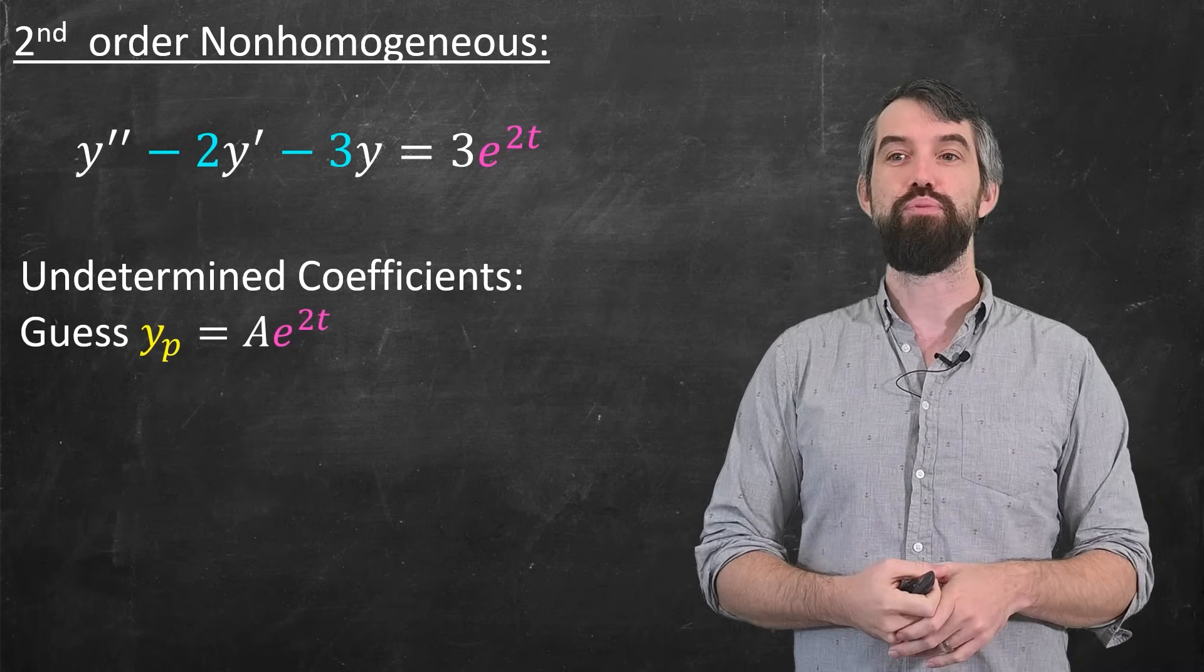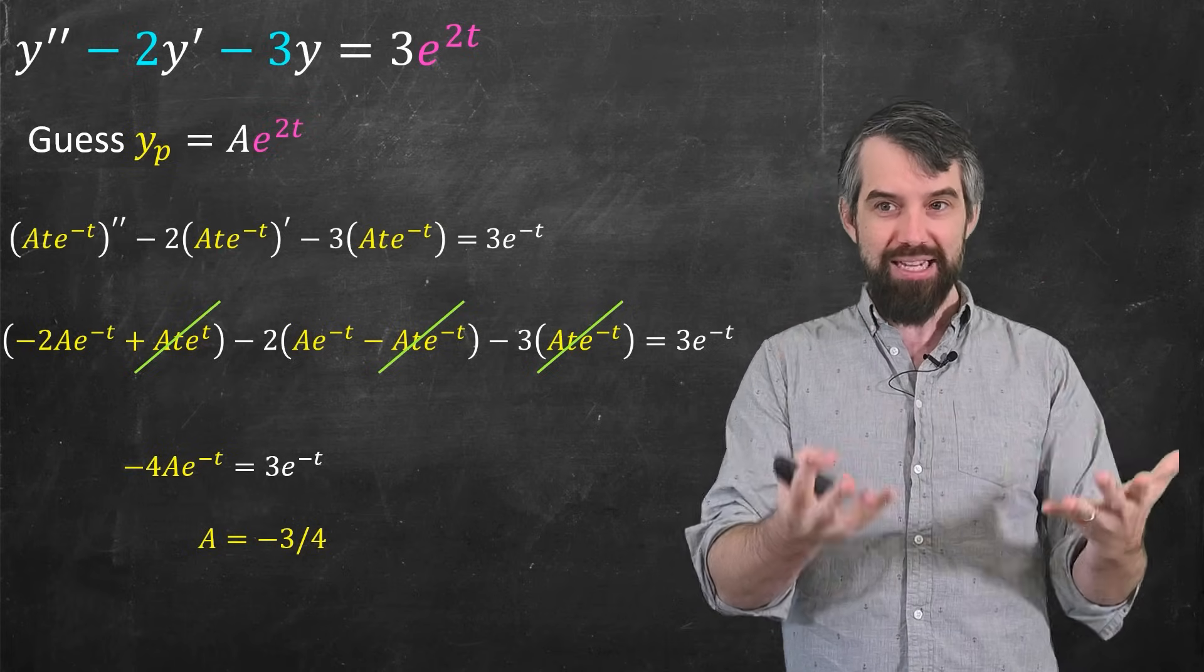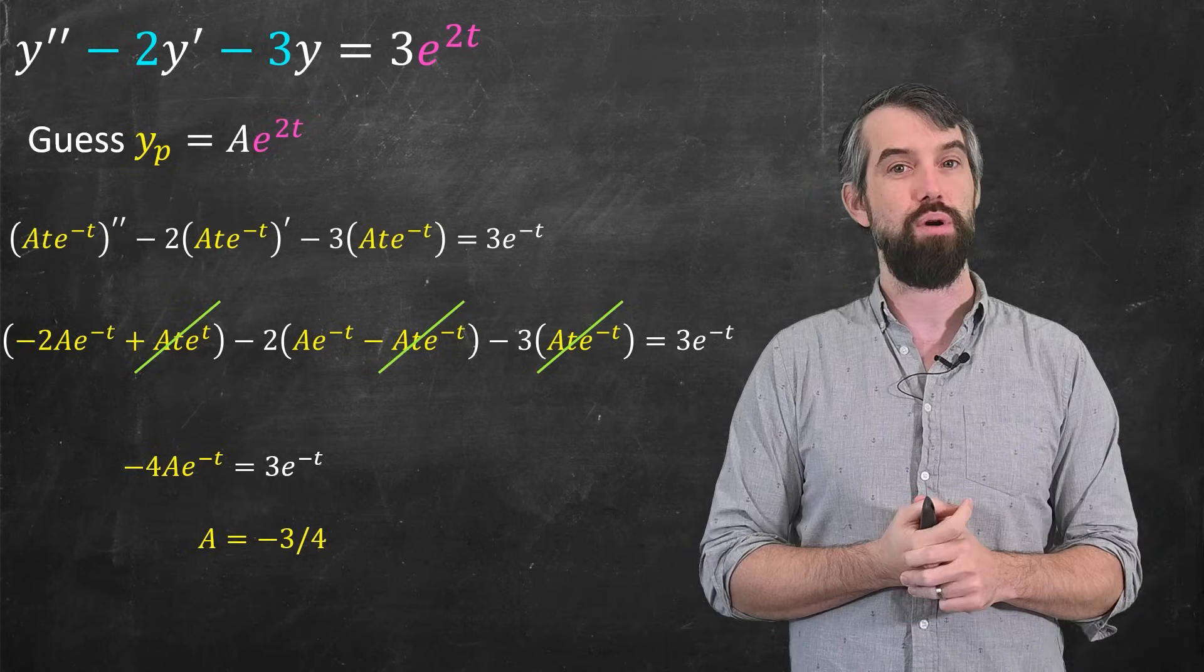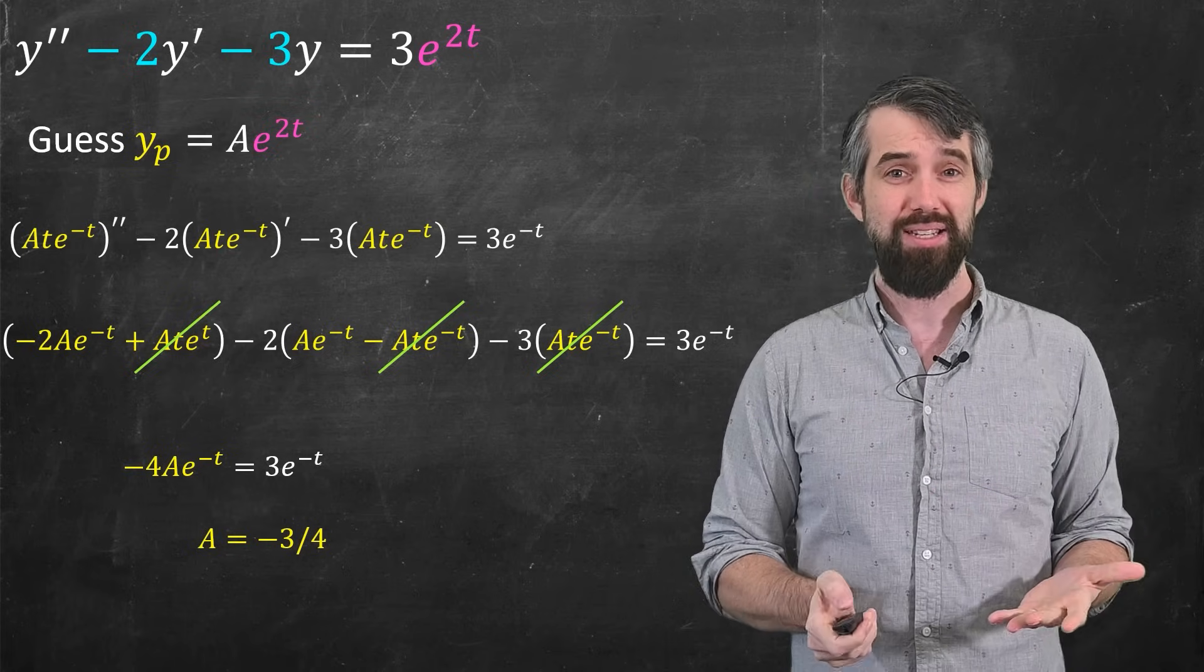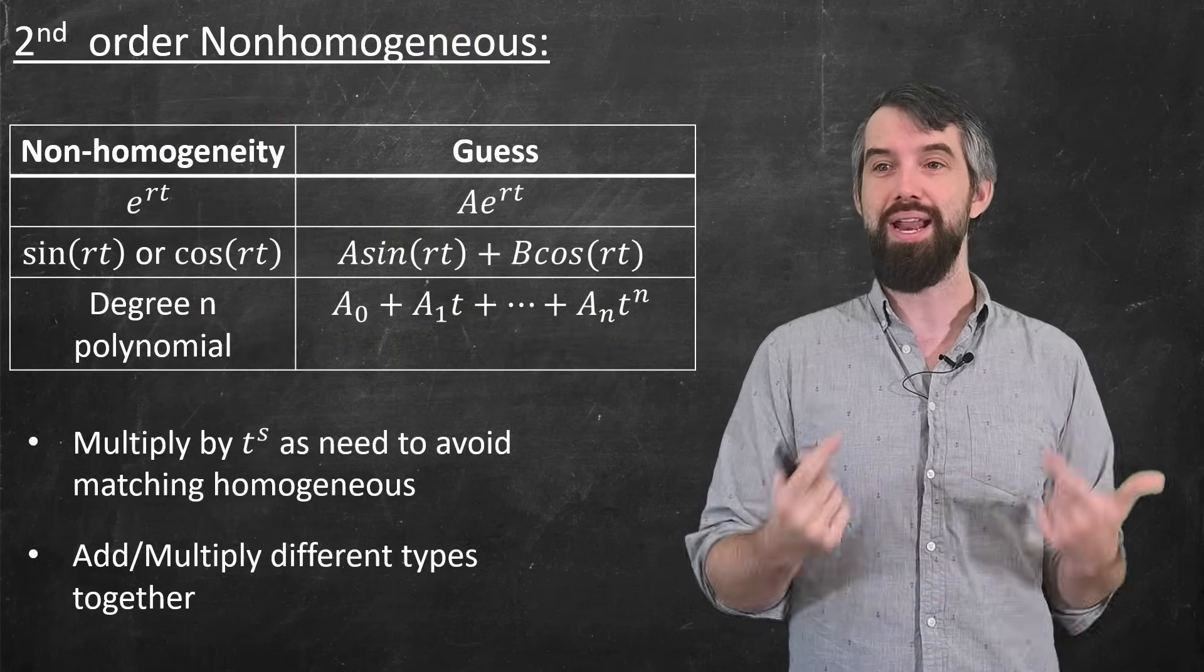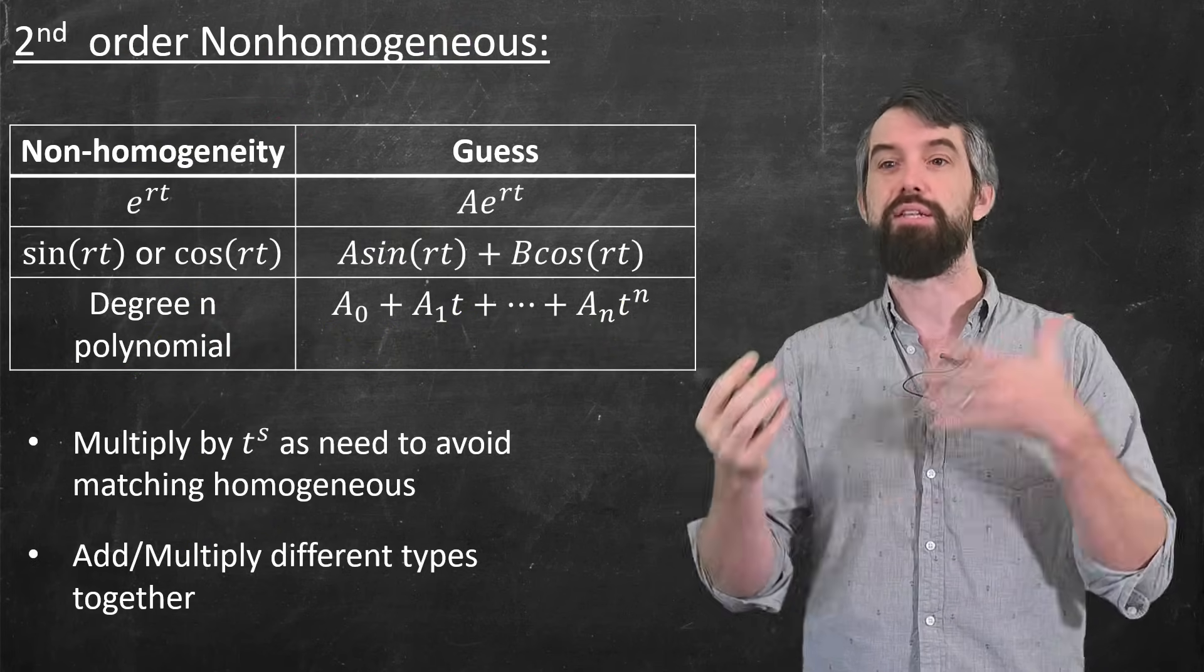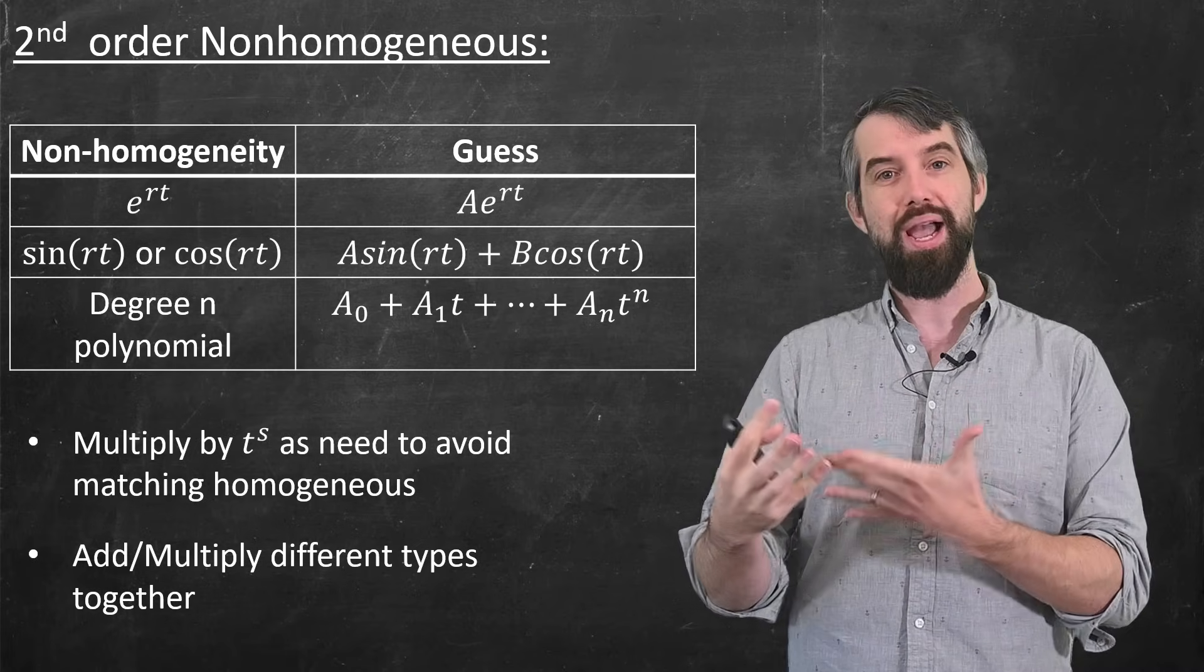So I'll put up very briefly the work. You can pause and go through it if you like. If you guess something like this, you can then go through and figure out what the value of the constant is. And it depends on what's on the right hand side. So there's kind of a little chart here that you can use if you like to know what kind of guess. If it's exponential, then you guess this. If it's sine and cosine, you guess that. So you can go through the chart to know what kind of things you can guess.